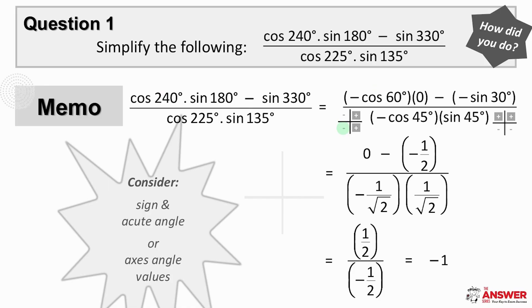Sine 180 is an axis angle. Let's draw a rough sketch of the sine graph and we quickly see that sine of 180 is zero.